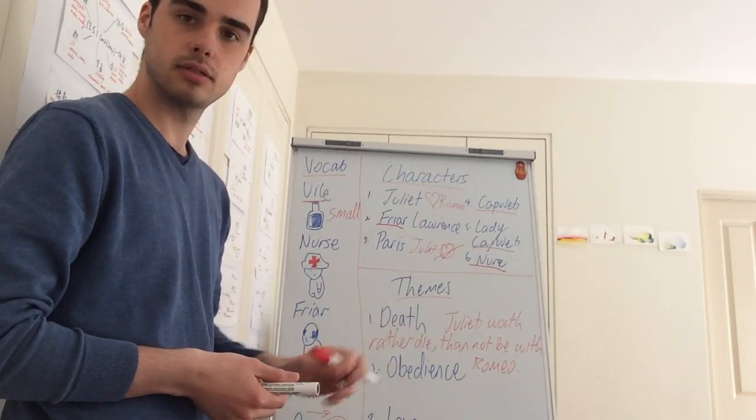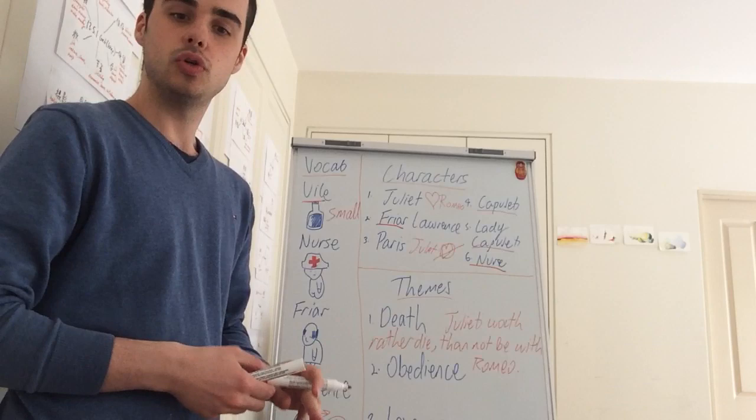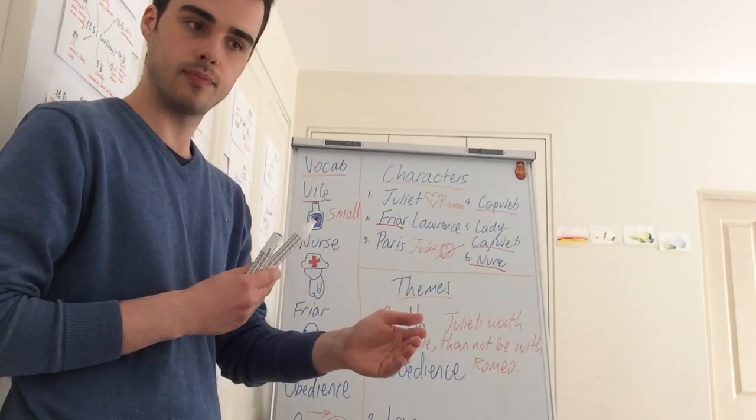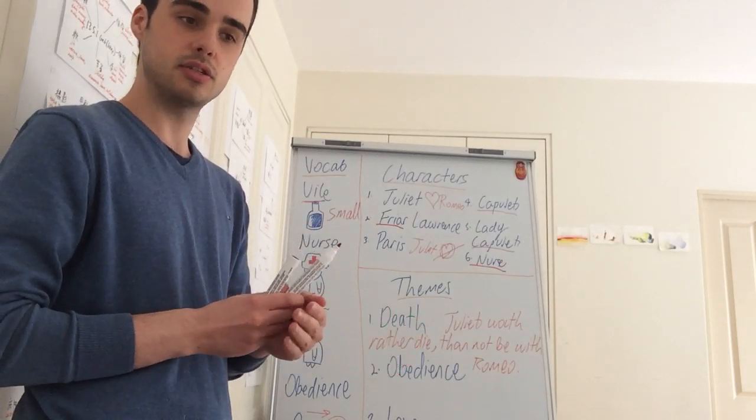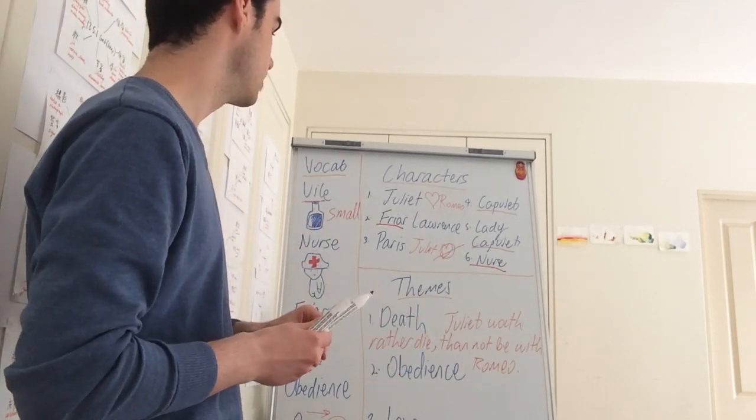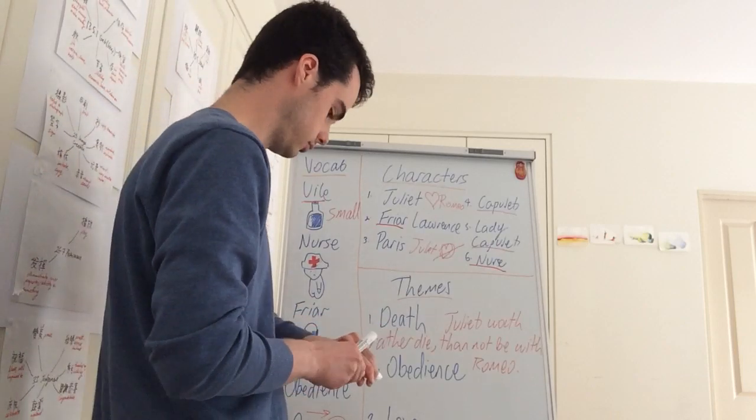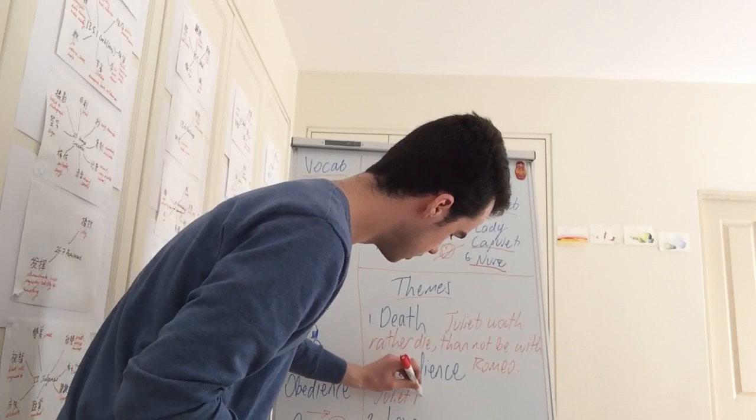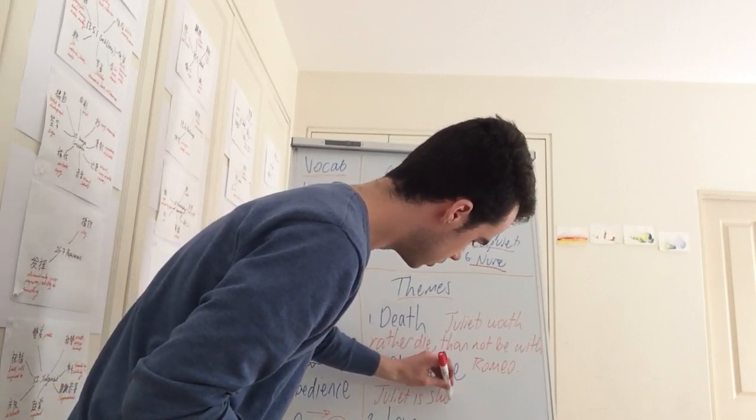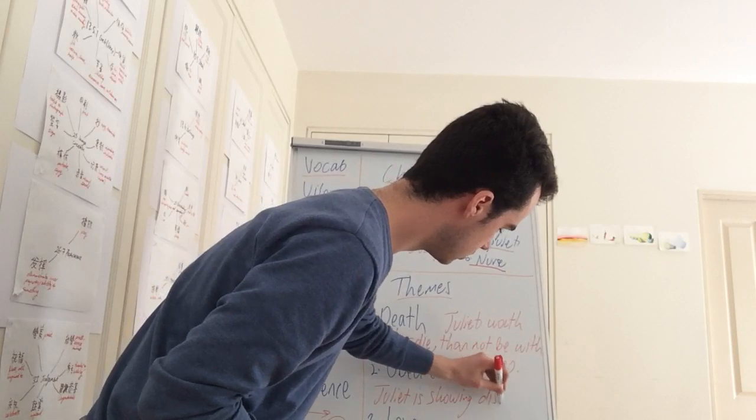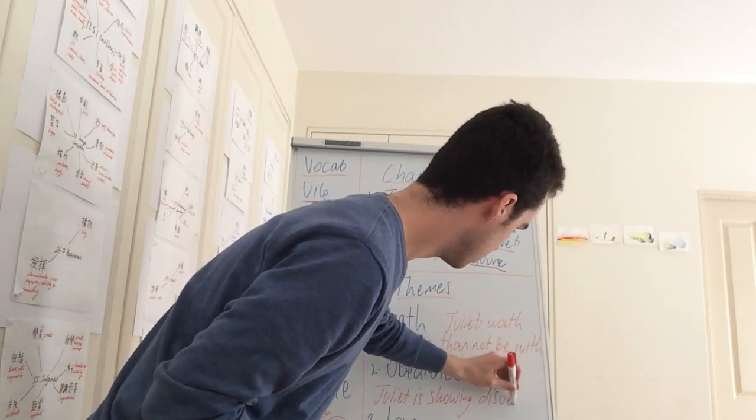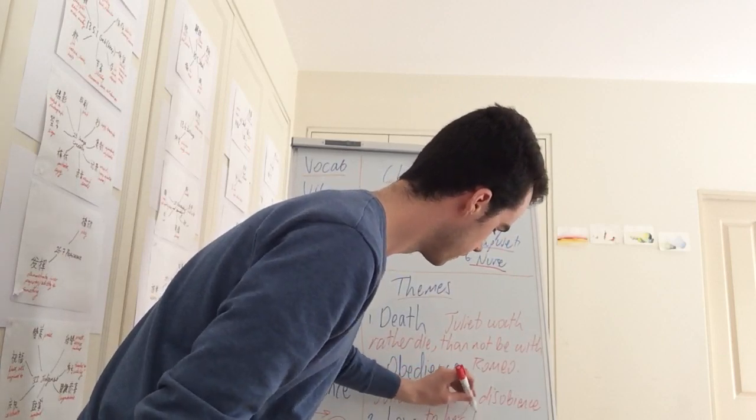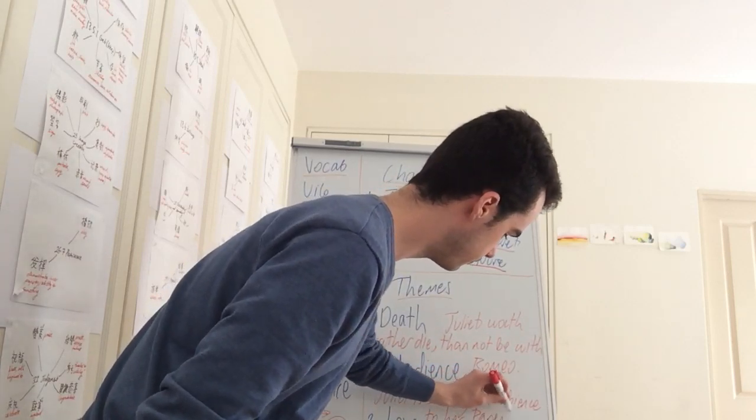And next we have obedience. Now Juliet's parents want Juliet to be obedient. But she's not. She's actually being disobedient. She's showing disobedience. Juliet's parents. So Juliet is showing disobedience to her parents.